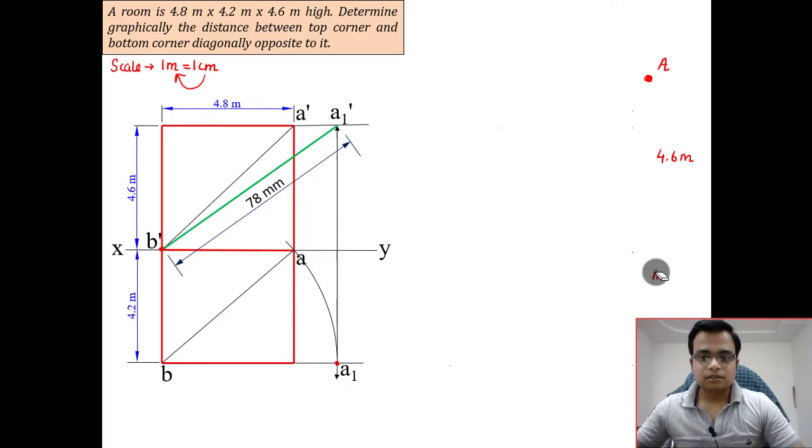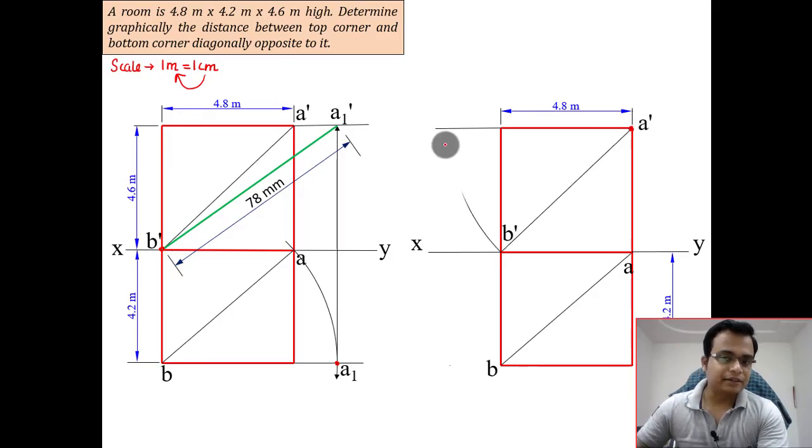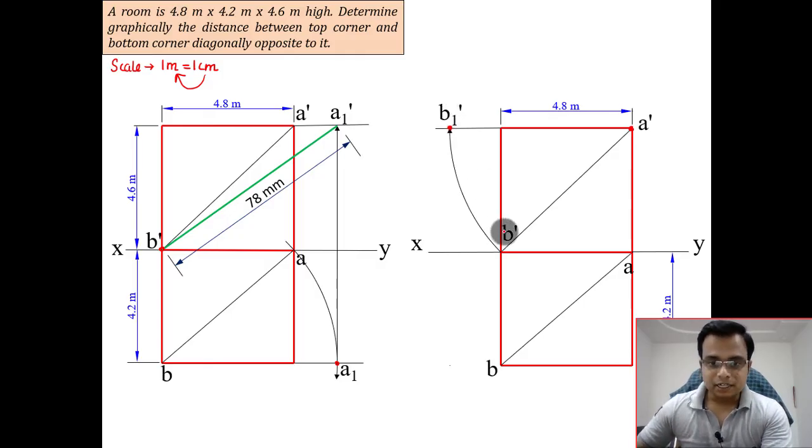Let's try to do the entire drill again. Let me rub all of this. Now we'll try to rotate the front view. Let's fix this A and rotate B dash. Extend the line from here towards the left, keep one leg of your compass at A dash and rotate it. This is the new position, let's call it B1 dash.